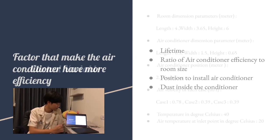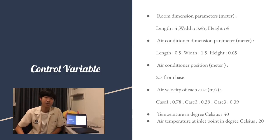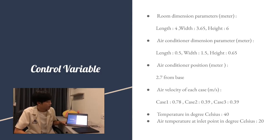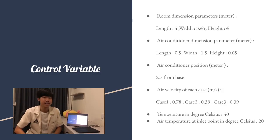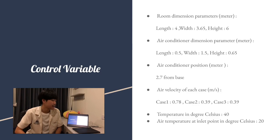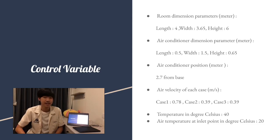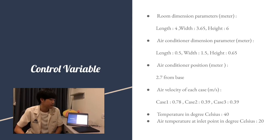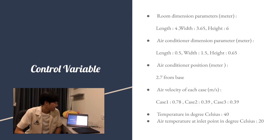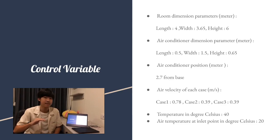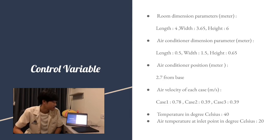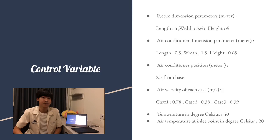For our control variables in this CFD project, the room dimensions in meters are: length 4 m, width 3.65 m, and height 6 m. The air conditioner dimensions are: length 0.5 m, width 1.5 m, and height 0.65 m. The air conditioner is positioned at a height of 2.7 m from the base.